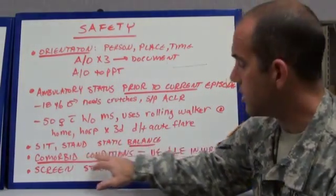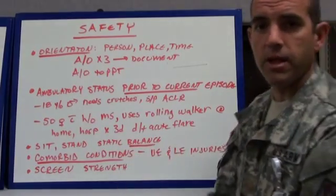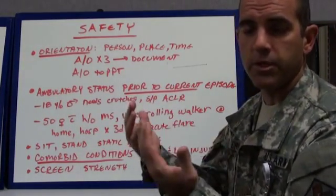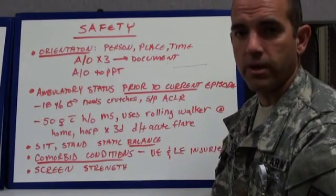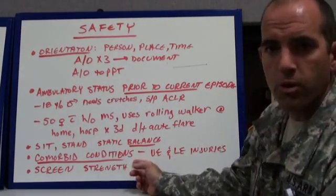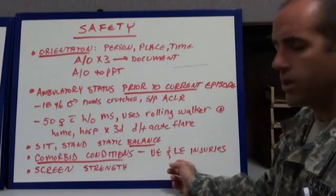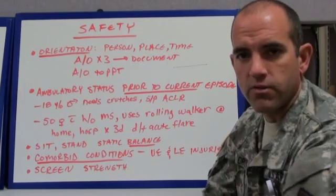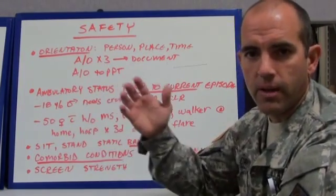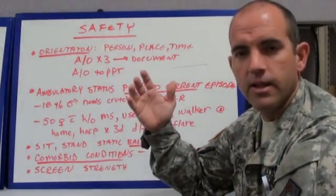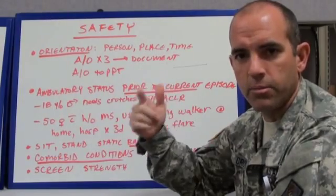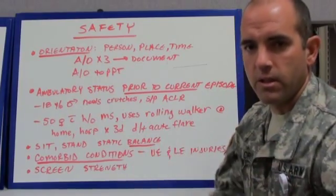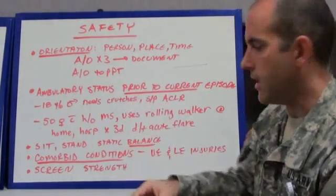Next, for safety, consider their sitting balance, standing, and static balance. Can a patient sit up straight and maintain their balance? If they can do that, can they stand up from a chair and maintain their balance while talking to them? Also consider other comorbid conditions — upper and lower extremity injuries. If you're using crutches for a lower extremity injury but the patient has a fractured hand, that's going to be difficult, and you'll need to plan modifications to facilitate mobility without injuring the hand.